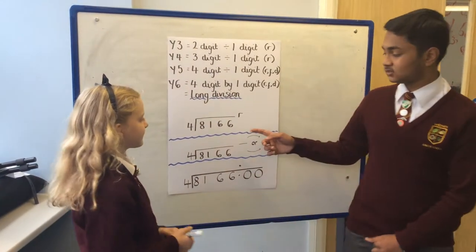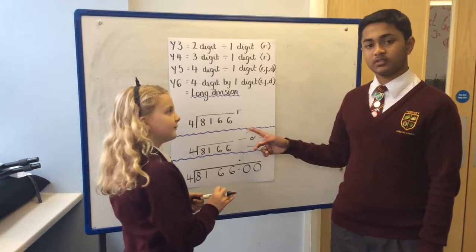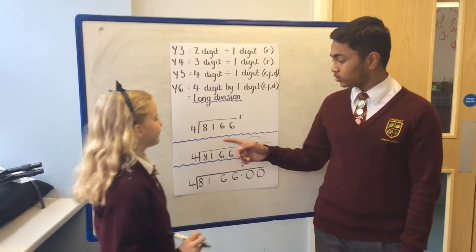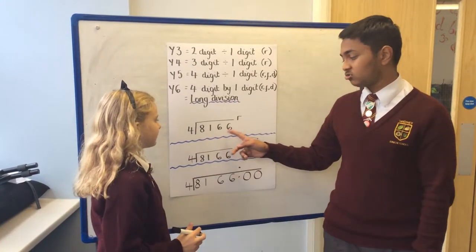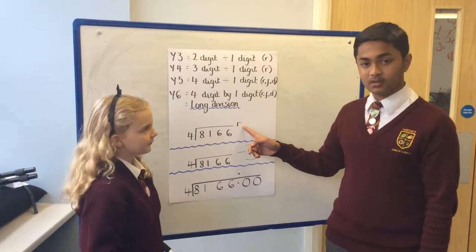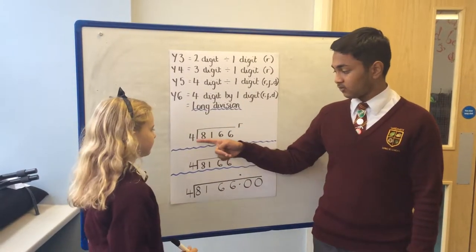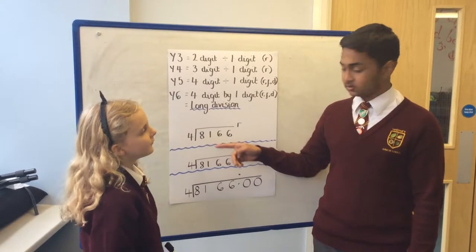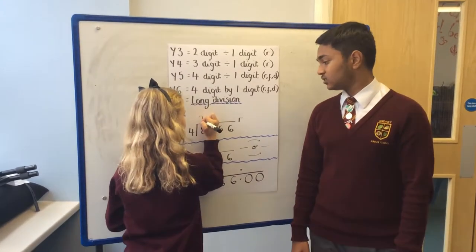So here we have a calculation that we are going to solve using the bus stop method. Here we are doing 8166 divided by 4 and we are going to show it with the remainder. So 4 into 8 goes twice, so you put a 2 on top of the 8.